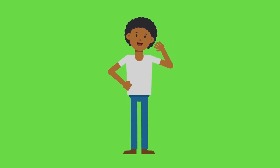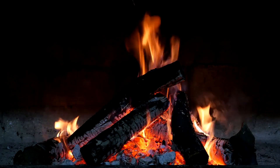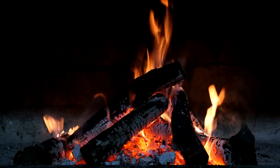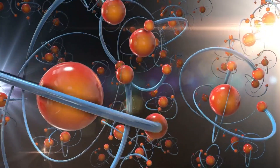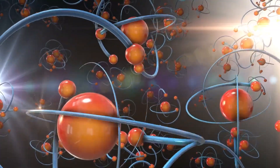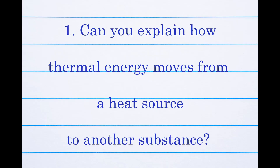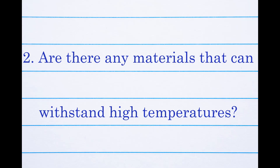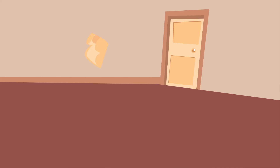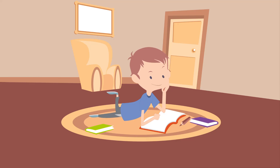Welcome back! In our previous video, we discussed how heat, also known as thermal energy, is responsible for changing the behavior of molecules in a pure substance and how that energy can result in the substance changing its state of matter. But here are two questions. First, can you explain how thermal energy moves from a heat source to another substance? Additionally, are there any materials that can withstand high temperatures? I am curious to learn more about this topic, so let's get right to it.